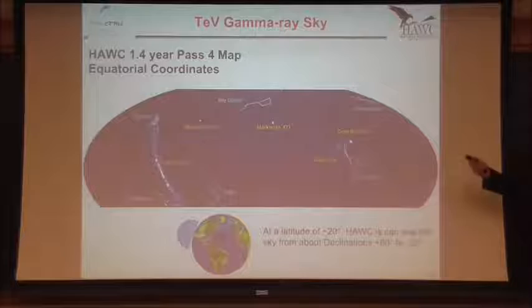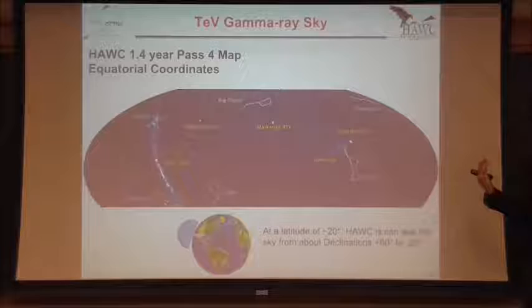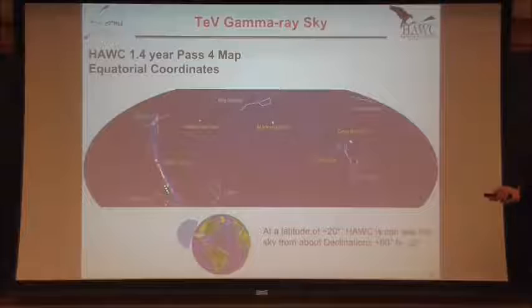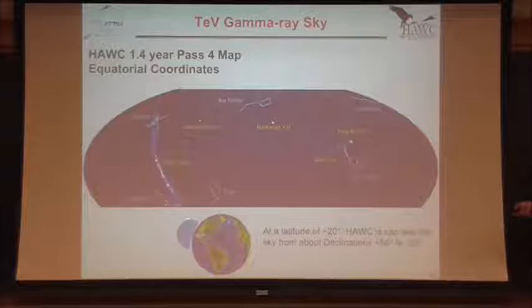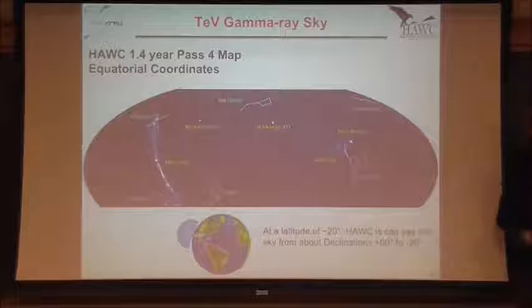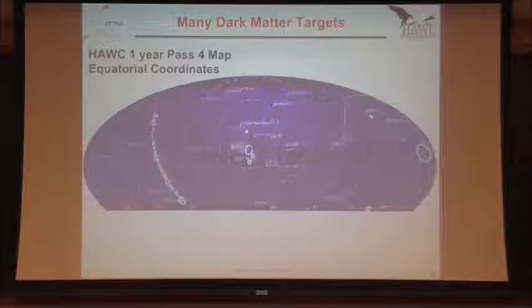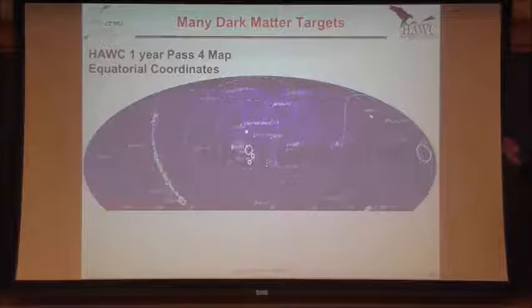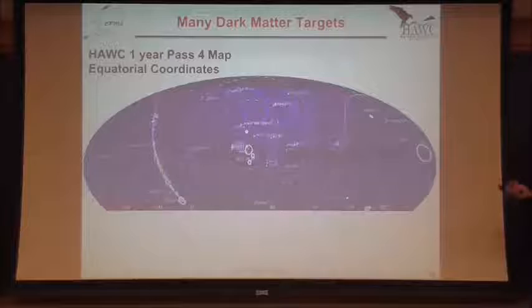When we plot it in equatorial coordinates, we can stick on the constellations everyone is familiar with. So you can understand: if our eyes saw 10 billion times more energetic TeV photons instead of visible light, we wouldn't see Orion, but we'd see the Crab, the fuzzy blob Geminga, these two Markarians, and this bright galactic plane. With Sagittarius, that's where the galactic center is — just at the edge of HAWC's field of view, which will be a challenging analysis. The white circles in the map are dark matter targets: regions with known concentrations of dark matter including M31, Virgo galaxy cluster, dwarf galaxies like Draco and Coma, and the galactic center.